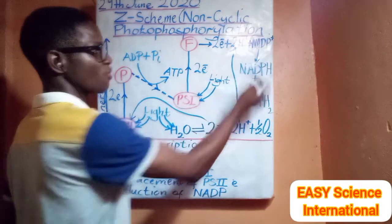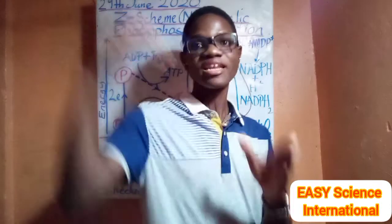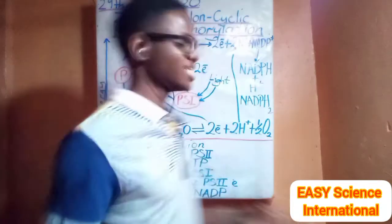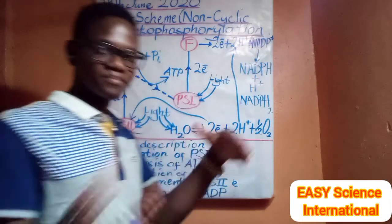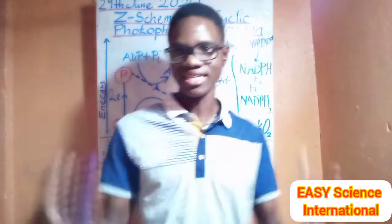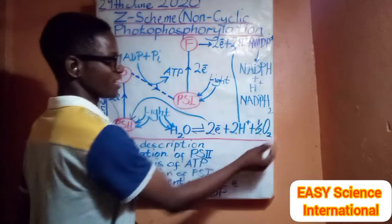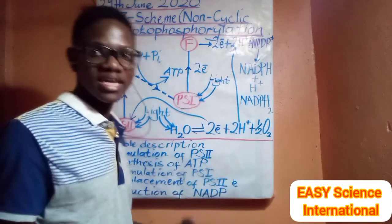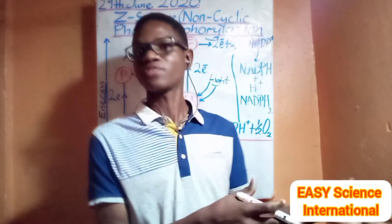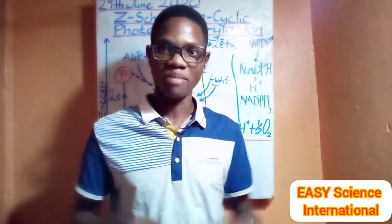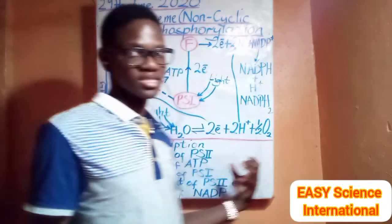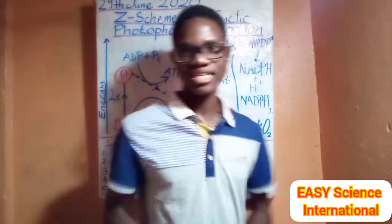The NADPH formed will then be used in reduction reactions in the dark stage. Both cyclic and non-cyclic types of photophosphorylation are involved. The oxygen released during photolysis, when the plant reaches its compensation point, can be used in the process of respiration, but at times it is released as a byproduct. Basically, in photosynthesis, oxygen is a byproduct.